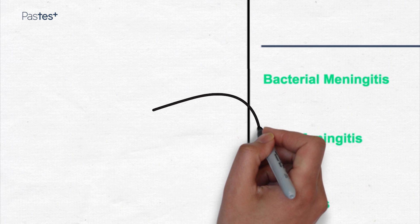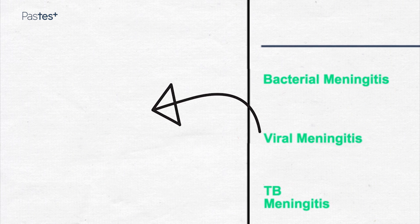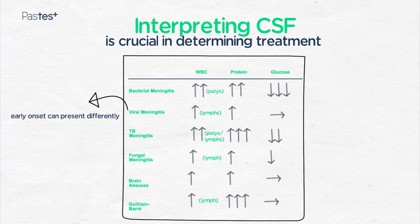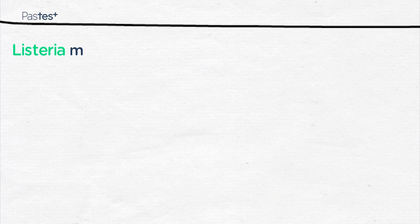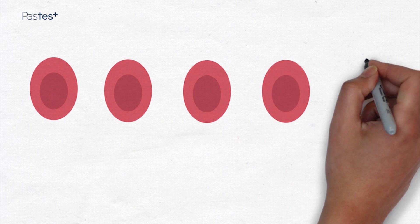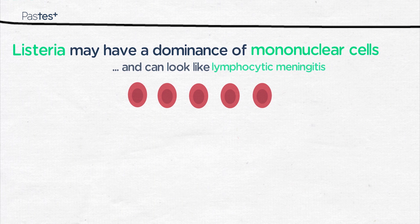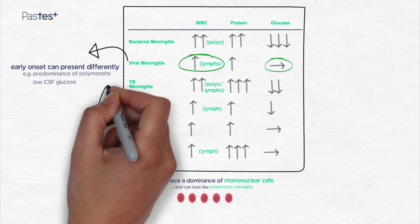Remember the exceptions: early viral meningitis can have a predominance of polymorphs — not what you would expect. Also, some viral meningitis can have a low CSF glucose. Remember that listeria may have a predominance of mononuclear cells rather than polymorphs, and this may look like a lymphocytic meningitis. Finally, TB can have a predominance of polymorphs rather than the expected lymphocytes.